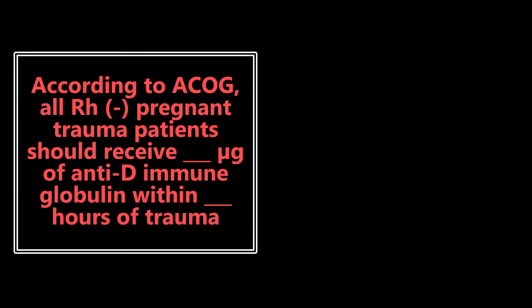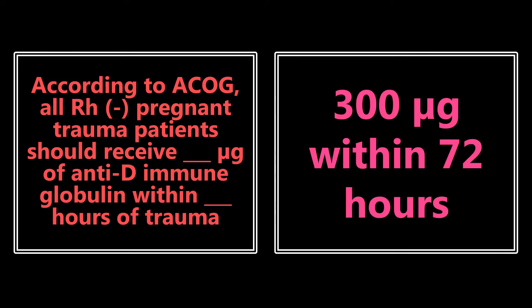According to ACOG, all Rh-negative pregnant trauma patients should receive 300 micrograms of anti-D immune globulin within 72 hours of trauma. This is really important to know. If you have a pregnant trauma patient that comes in from an MVC or something like that, it is 300 micrograms of anti-D immune globulin within 72 hours of the trauma. Very important to know both of those numbers.